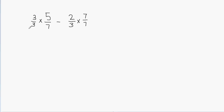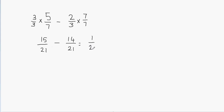Now we just multiply the numerators and denominators: 3 times 5 is 15, and 3 times 7 is 21. Minus: 2 times 7 is 14, and 3 times 7 is 21. Now you can see that both fractions have the same denominator, so these are like fractions. Now we subtract the numerators: 15 minus 14 is 1, and the denominator stays 21. So the final answer is 1 over 21.